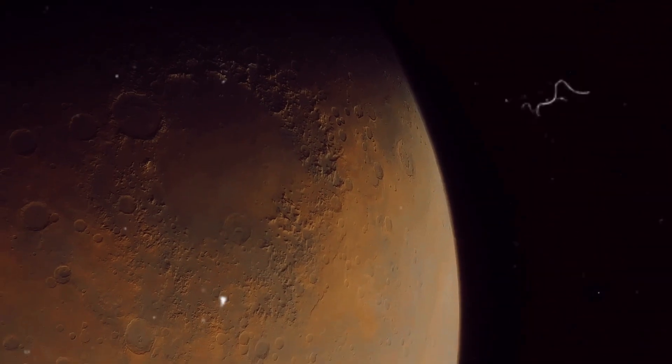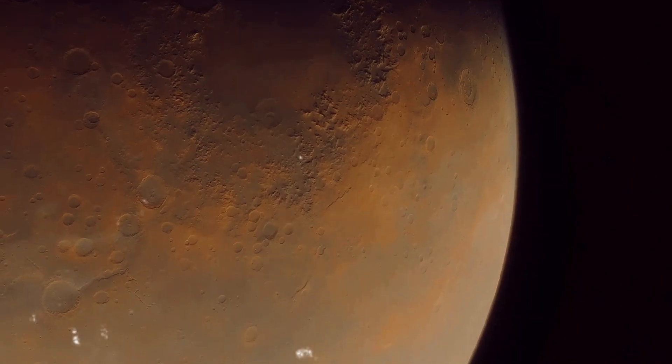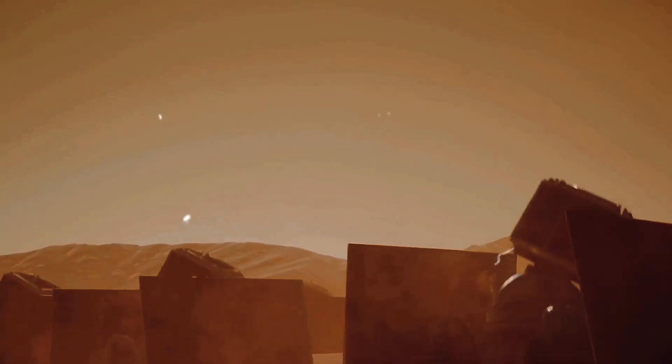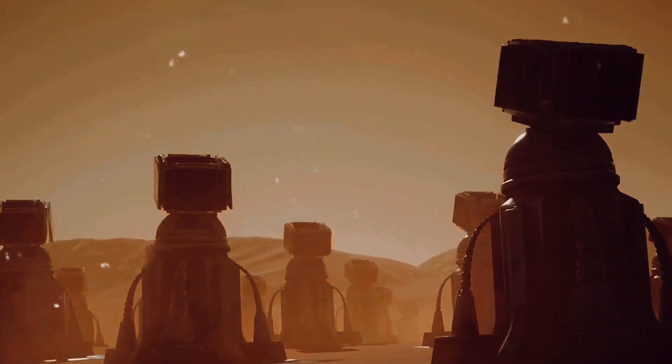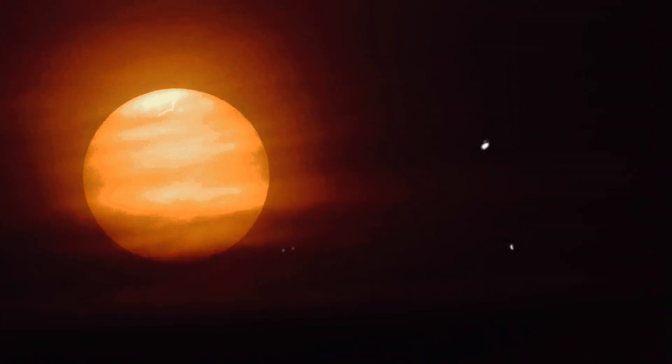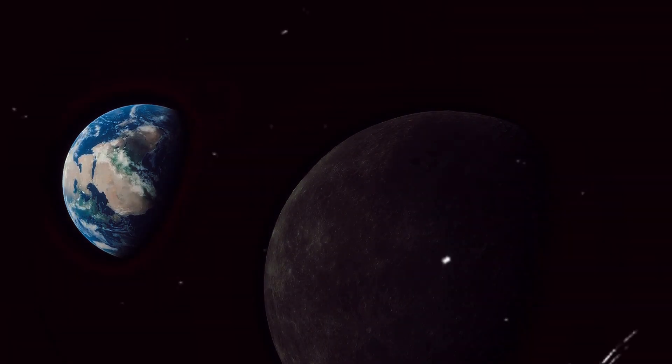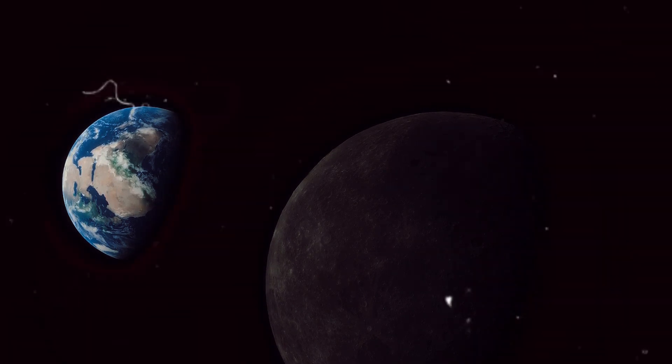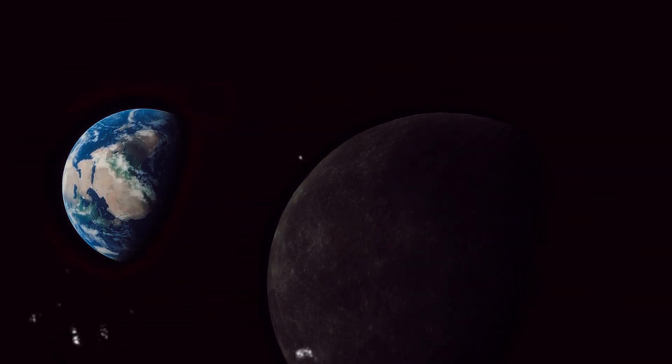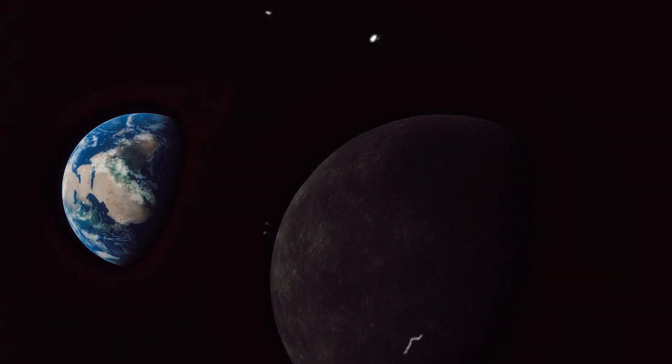In our exploration today, we've journeyed through a hypothetical scenario. Imagining Earth in Mars' orbit, we've considered the Martian climate, colder and harsher than our own. We've acknowledged the lengthier Martian year and day, disrupting our familiar 24-hour cycle, and we've pondered the fate of our moon, a faithful companion potentially lost to the vastness of space. These points underscore the vital truth that Earth exists in a sweet spot within the solar system, a balance that allows life to flourish.